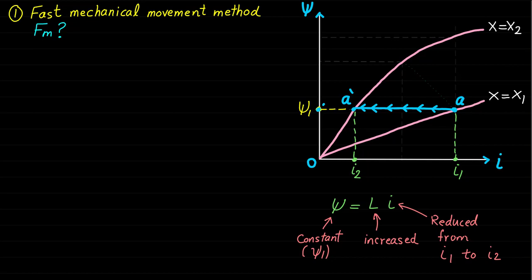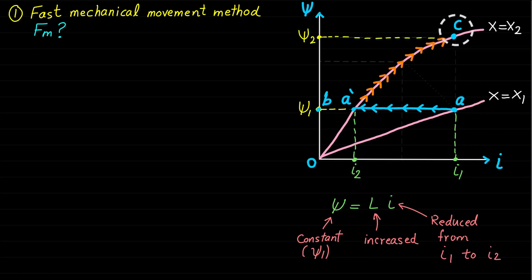Once the moving part stops at point A-dash, the magnetic field linkage and the current I will increase following the trajectory A-dash to C until reaching the steady state at point C. The mechanical power during the trajectory A-dash to C is equal to zero because there is no movement. Therefore, there is no electromechanical energy conversion during this trajectory. We will focus only on the movement from A to A-dash.